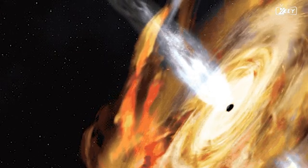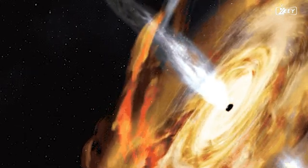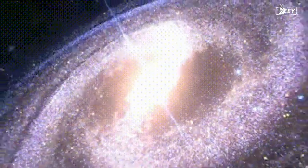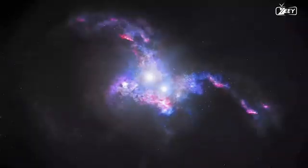Material entering the accretion disk, a swirling circle of gas and dust surrounding the galaxy's central black hole, causes the AGN to emit tremendous radiation. The AGN's host galaxy is referred to as an active galaxy, and its nucleus is the central feature.